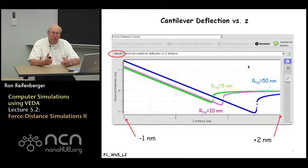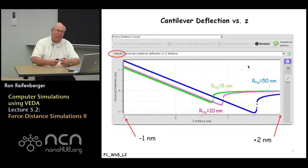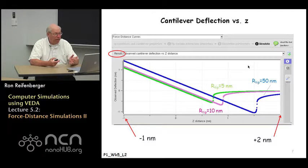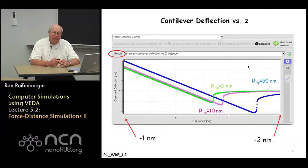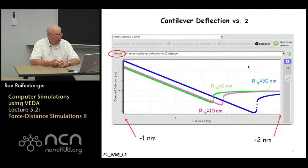This gives you some indication of how you might fit experimental data to a simulation. It clearly shows you have to consider the tip radius — in addition to the tip modulus, you need information about tip radius when making comparisons between simulation and experiment. This ties into the discussion from weeks one and two of part one of this course.